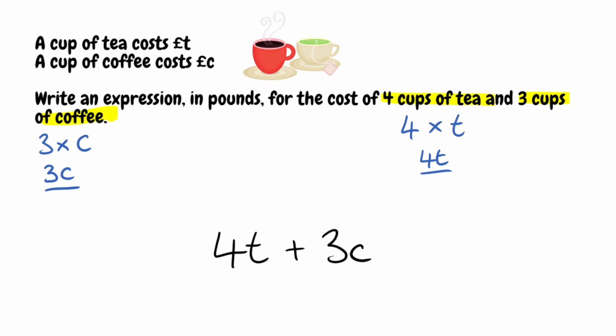But I need to go back to the question — it says write an expression in pounds. So I need to make sure I put my pound sign at the beginning. And that would be my final expression for the cost of four cups of tea and three cups of coffee.